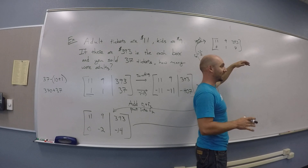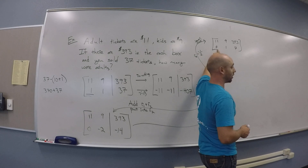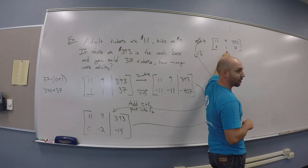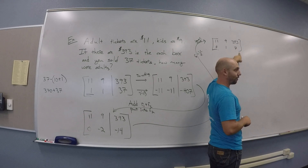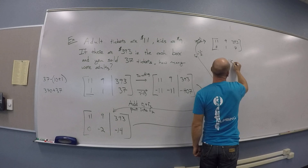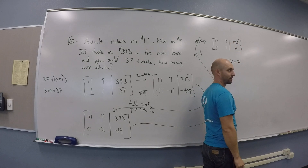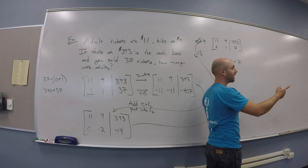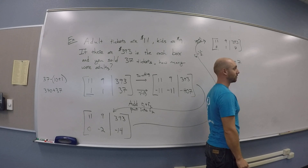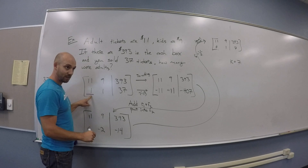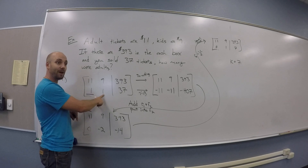Let me demonstrate that I did something useful here. What was this first column standing for? Adults — that was the adults variable. The second column was the kids variable, and the last column was the number. So this bottom line says: 0 adults plus 1 kid equals 7. You sold 7 kids' tickets and 30 adults' tickets. If I had targeted the other entry instead, I would have gotten A equals 30 directly.